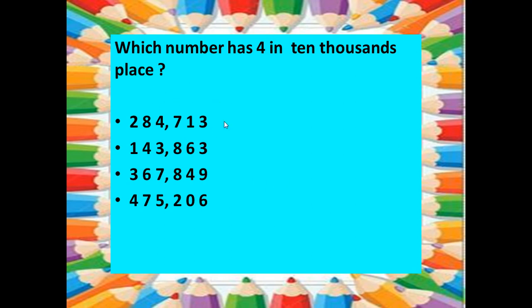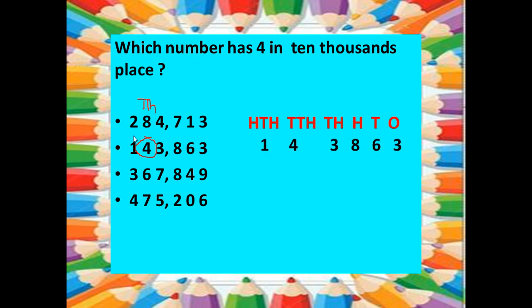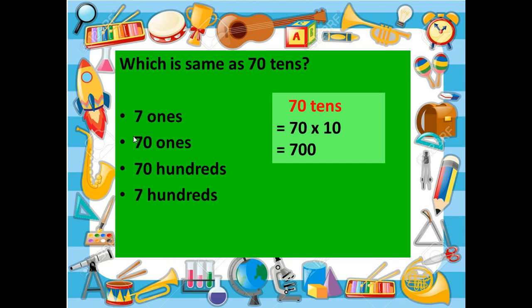The next question is: which number has 4 in the ten-thousands place among the given numbers? We write the places according to the international system — ones, tens, hundreds, thousands, ten thousands, hundred thousands — since the commas in the options are placed according to the international system. Looking at the ten-thousands place for all options, we find that the number 1,43,863 has 4 in the ten-thousands place.